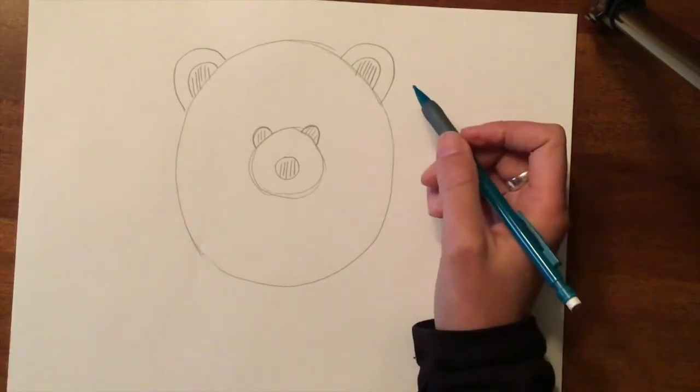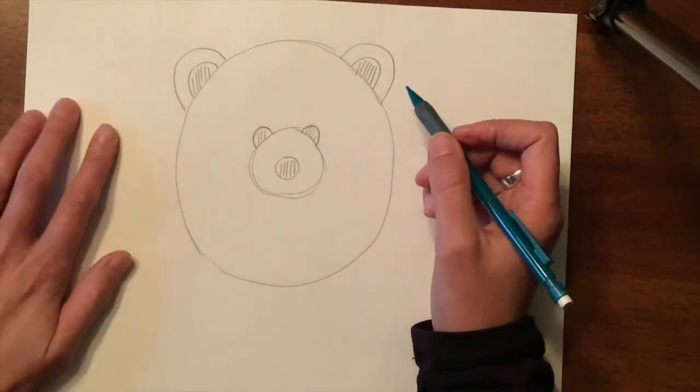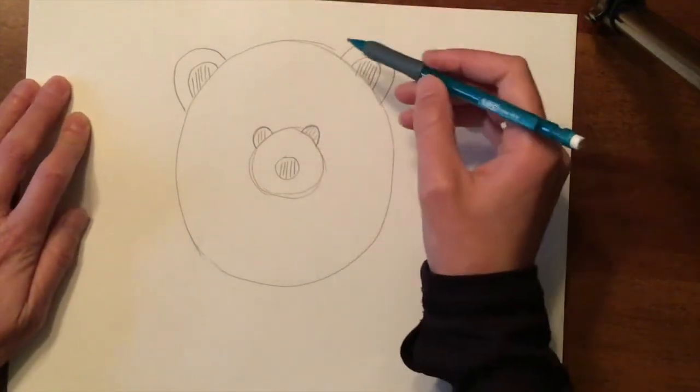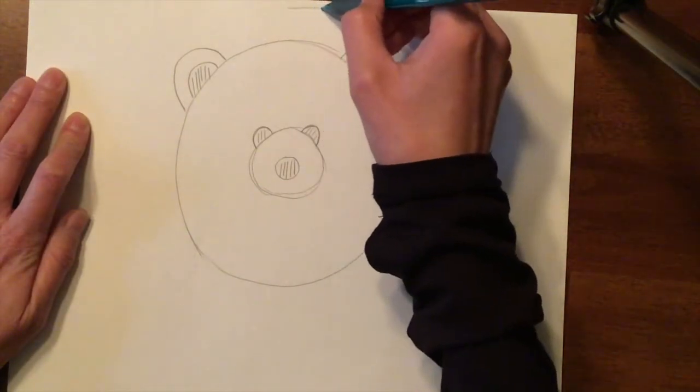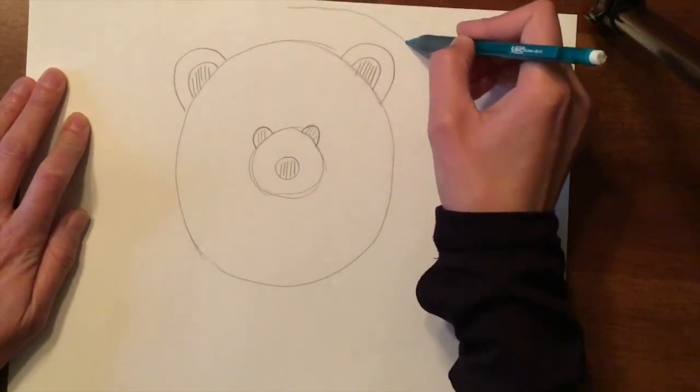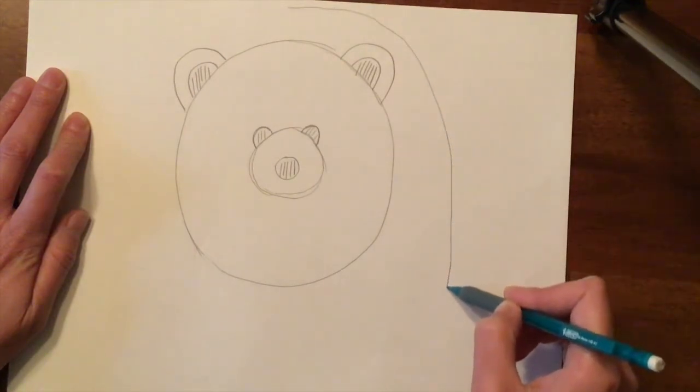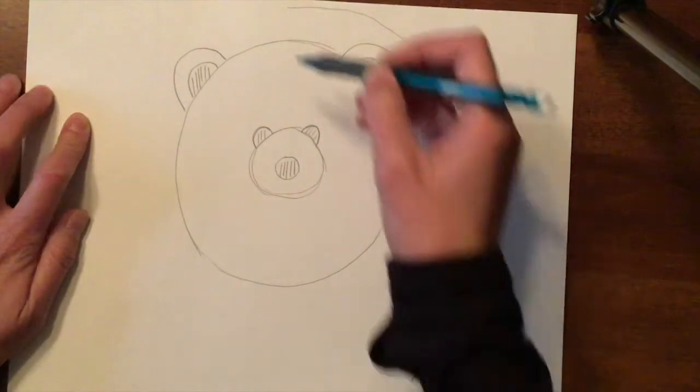The next thing is to make the bear's body. And that is going to be like another half circle, but it's kind of going to be a little bit more like an upside down U. So it goes above the head, down, down, down almost to the bottom of the paper.